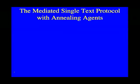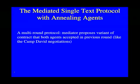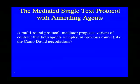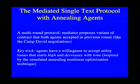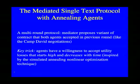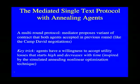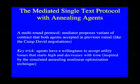One of the first protocols investigated for this problem is the mediated single text protocol with annealing agents. It is a multi-round protocol where a mediator proposes, in each round, a variant of the contract, accepting only those that both or all agents accepted in previous rounds — a protocol first designed for the Camp David negotiations. To make this work with nonlinear utility functions, a key trick is introduced: agents have a willingness to accept contract variants that create some utility loss for them, doing so stochastically with a probability that is high at first but decreases over time, inspired by the simulated annealing technique for nonlinear optimization.